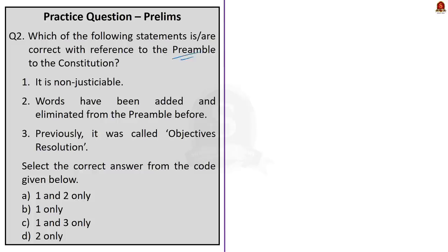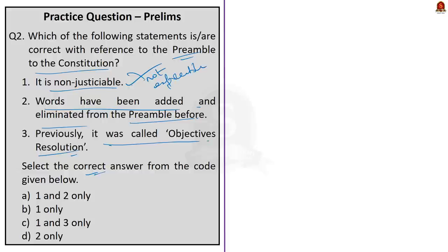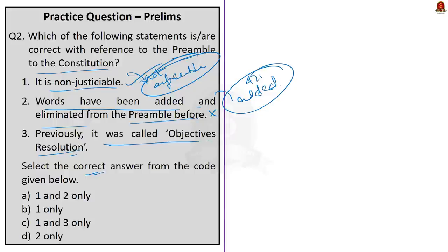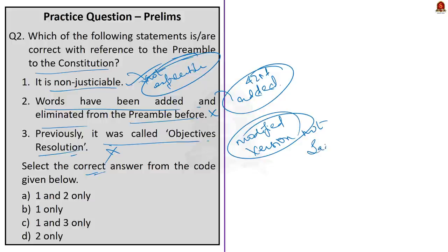The second question is also regarding the preamble: 'Which of the following statements is/are correct with reference to the preamble to the constitution? (1) It is non-justiciable. (2) Words have been added and eliminated from the preamble before. (3) Previously it was called the Objective Resolution.' Statement 1 is correct — non-justiciable means its provisions are not enforceable in courts of law. Statement 2 is incorrect — the preamble was amended only once by the 42nd Amendment, which added words but did not remove any. Statement 3 is also incorrect — the preamble is a modified version of the Objective Resolution, not the same as it. The correct answer is option B: one only.